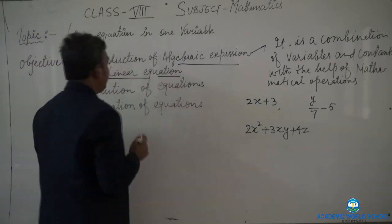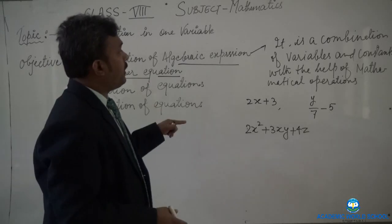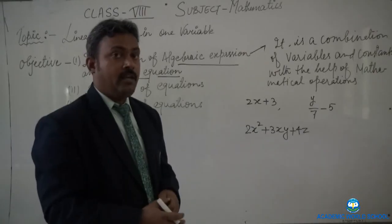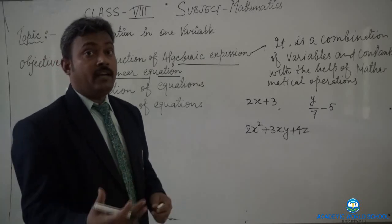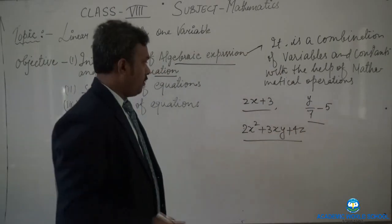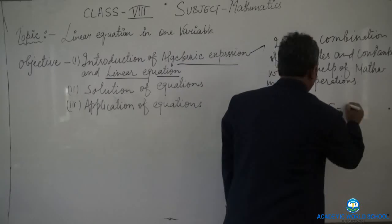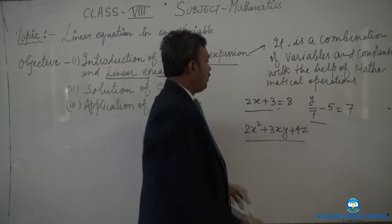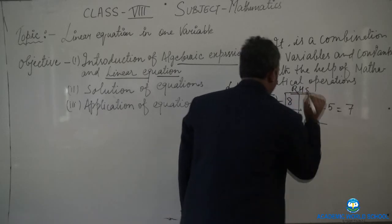Now, if you look at a linear equation — 'equation' means equality. An algebraic expression becomes an equation when there is a sign of equality with the expression. Remember, an algebraic expression will be an equation when there is a sign of equality. In the examples we saw, there is no sign of equality. If we put an equality sign, they become equations. In an equation you will see two sides: one is the left-hand side and another is the right-hand side.